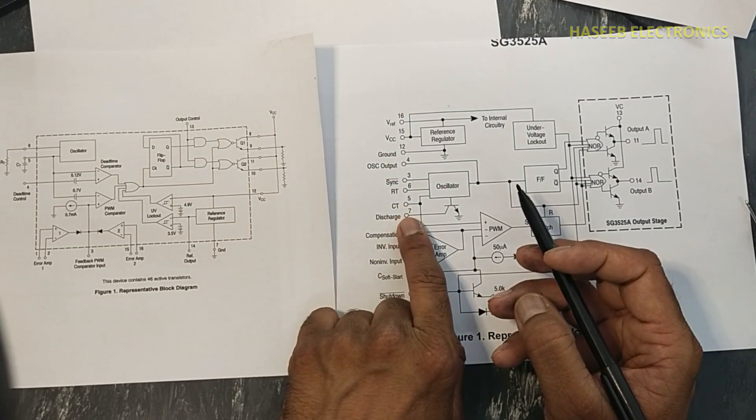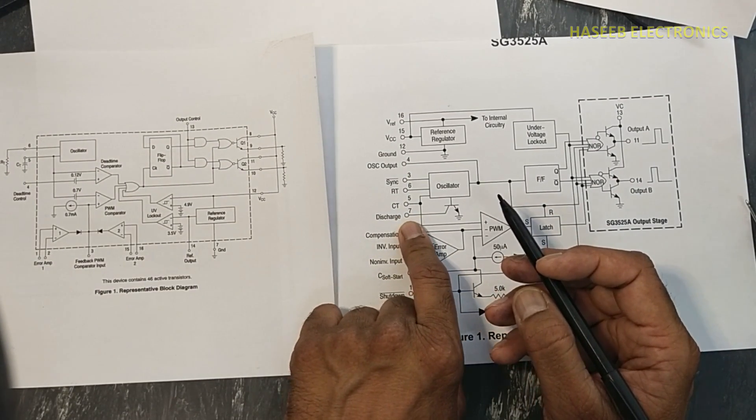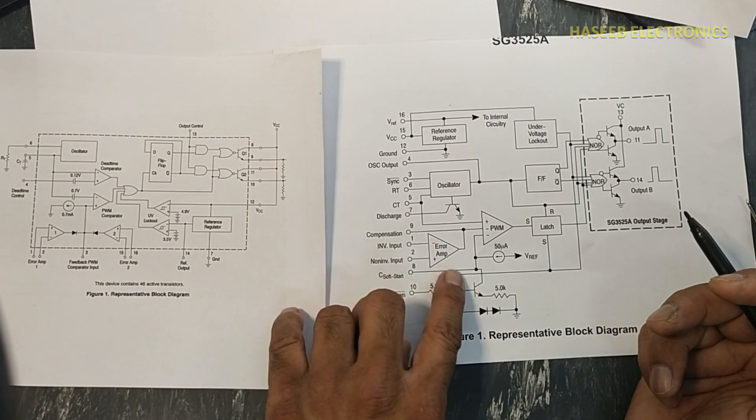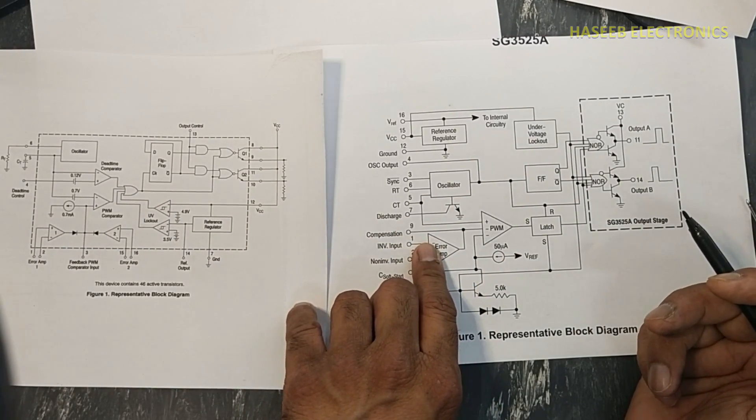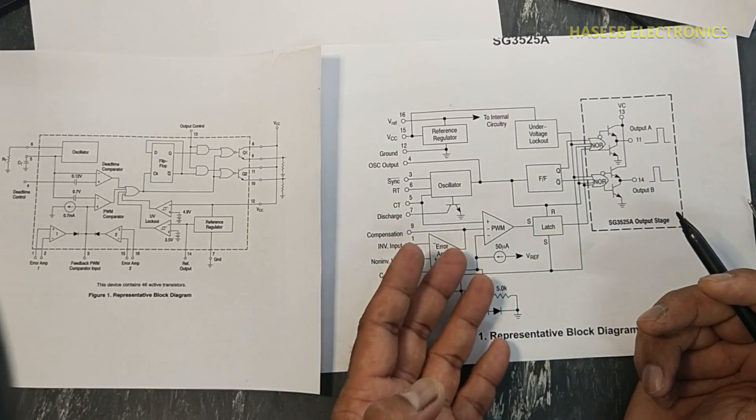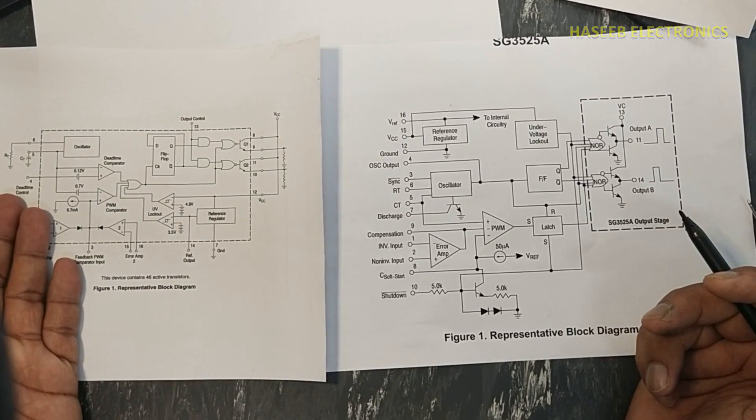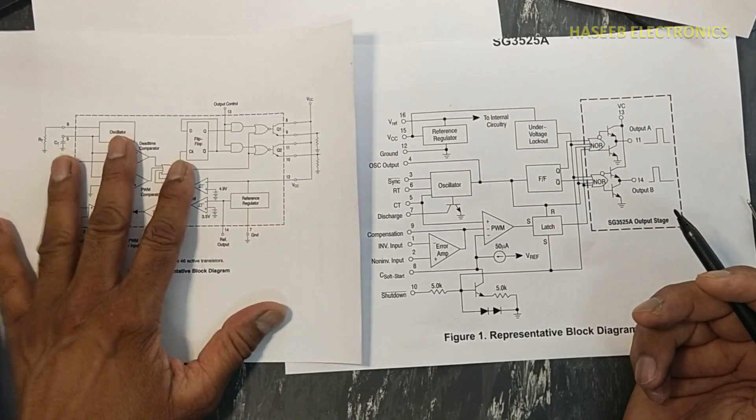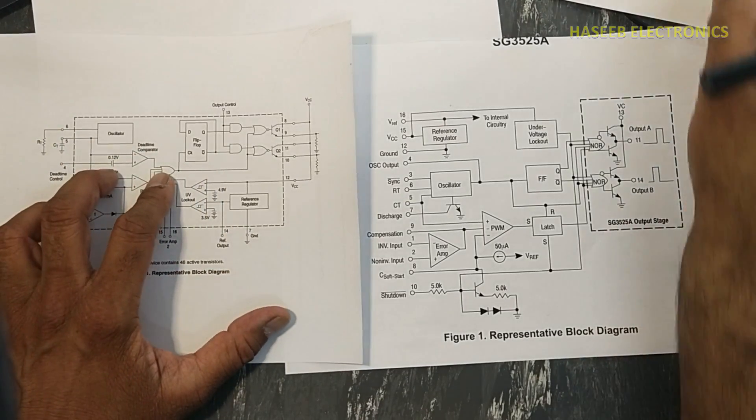So pin number seven, that is used to produce dead time control. And here is error amplifier for voltage setting or for current setting. This IC most commonly used in welding machines where we need very high current. This IC is used in most of the power supplies for push-pull configuration.